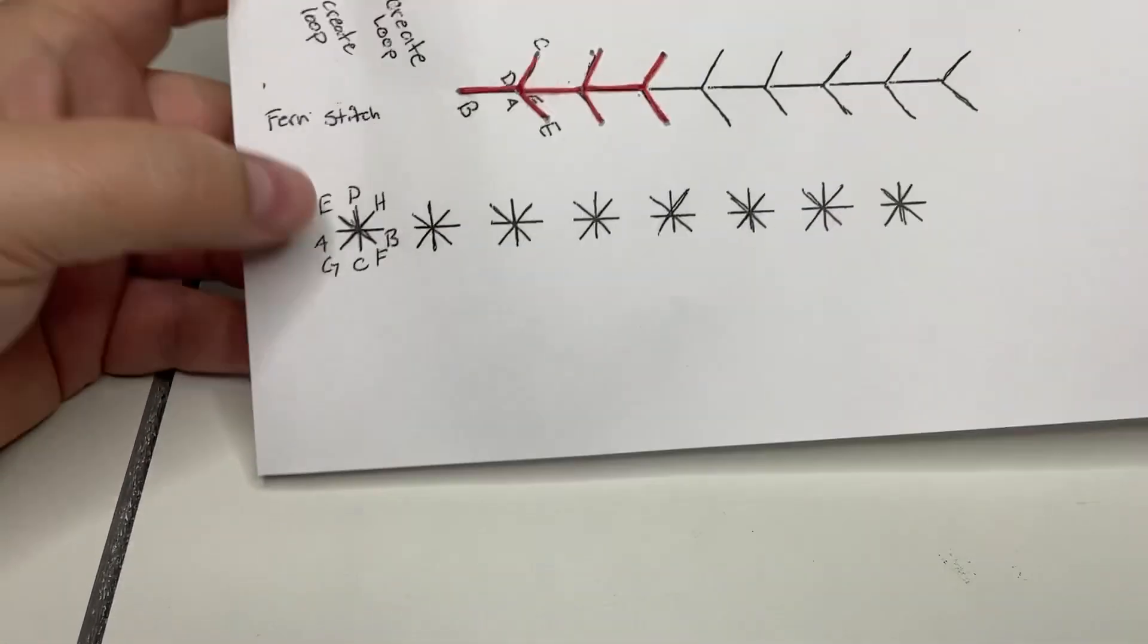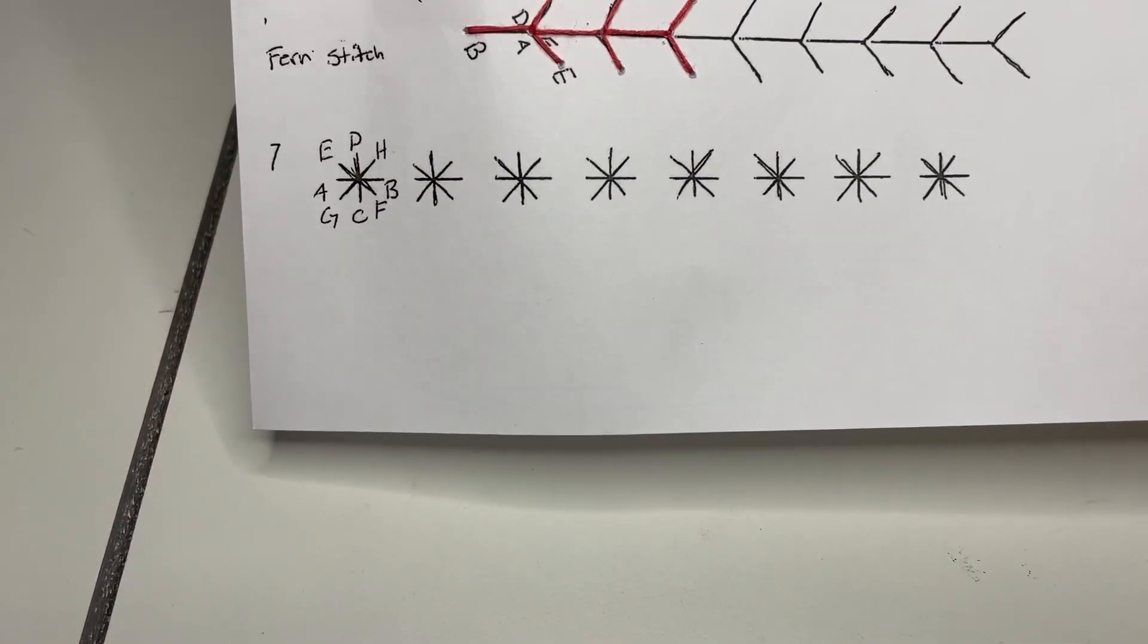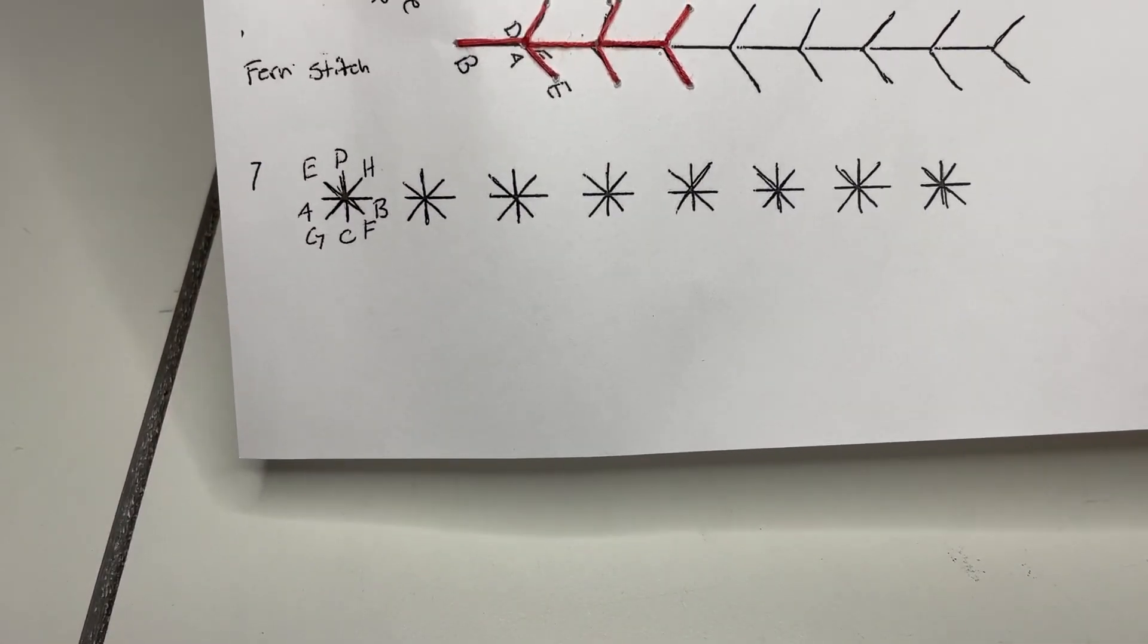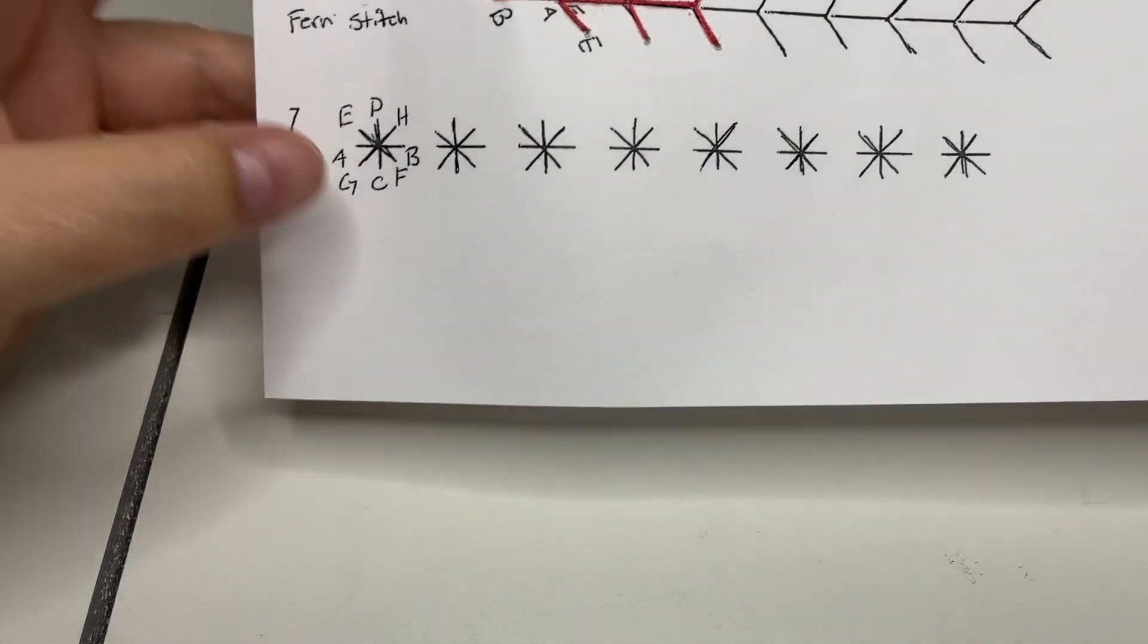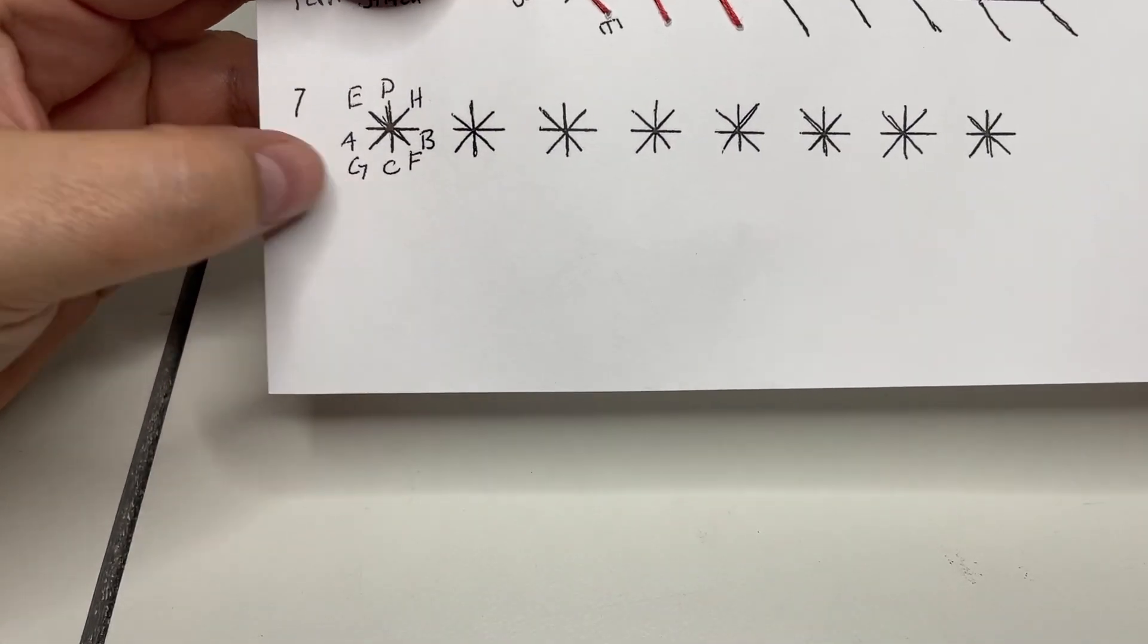For this last video, we're going to show you how to do the star stitch. There are a couple different ways you can do this. I'm going to show you two variations - you can pick whichever one you want. Both of them work just fine. One I think is a little bit easier than the other, but you can choose.